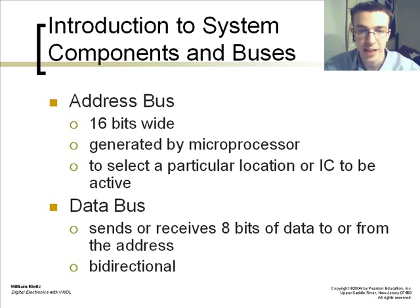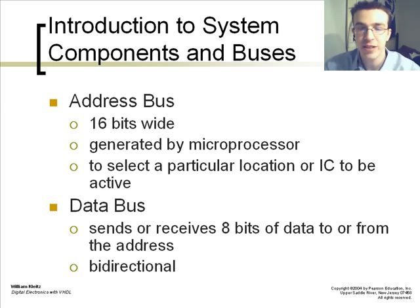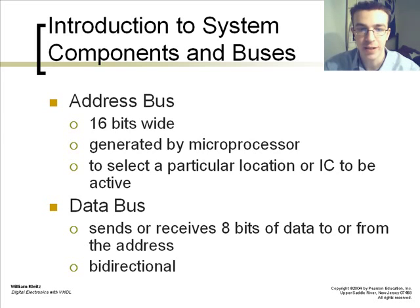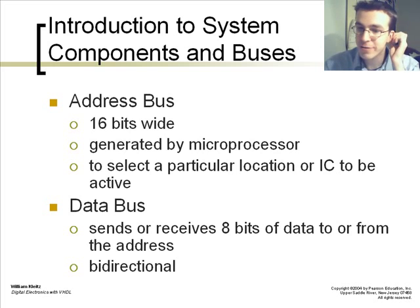The address bus is usually 16 bits wide, generated by the microprocessor. It selects a particular location or IC to be active for that specific address. The data bus sends or receives 8 bits of data to or from the addressed location. It is a bi-directional bus.